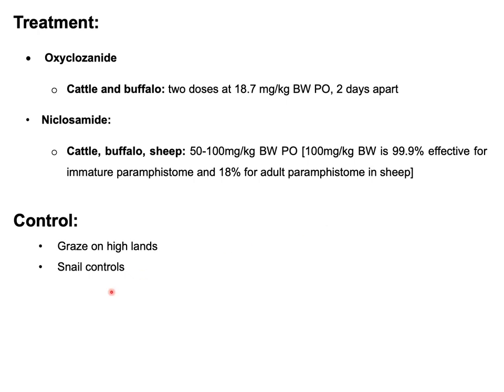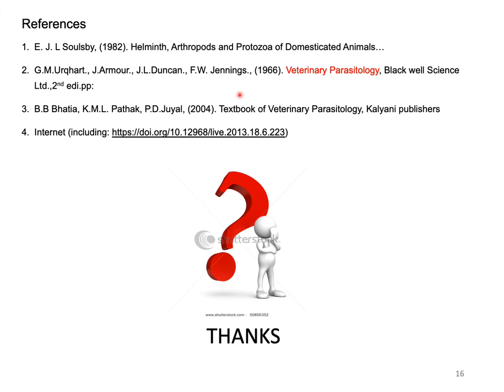Finally, for control: as there is involvement of an intermediate host in the life cycle of Paramphystomum, snail control is very important. Cattle should be grazed on highlands where there is less infestation of the intermediate host. These are the reference books used during preparation of this presentation, along with different internet resources. This is all about Amphistomosis or Paramphystomosis. Thanks for listening. If you want to get more videos on parasitology, particularly helminthology, please subscribe to my channel.